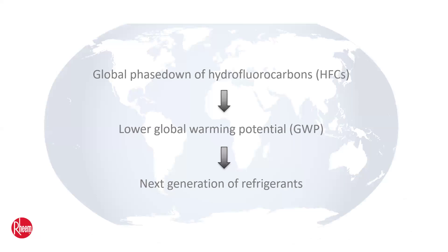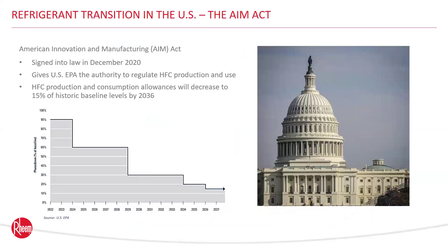The reduction of hydrofluorocarbons, or HFCs, is a global trend. A successful HFC phase-down is expected to avoid up to half a degree Celsius of global warming by the year 2100. As the HFC phase-down progresses rapidly around the world and in the US, the HVACR industry is transitioning to the next generation of refrigerant alternatives with lower global warming potential. A2L refrigerants are the primary candidates capable of achieving the necessary GWP reductions.